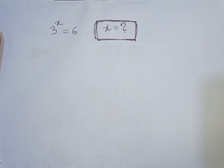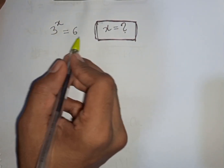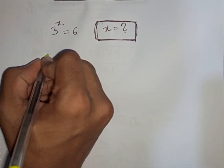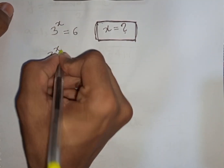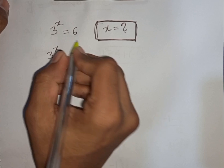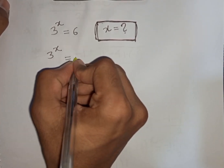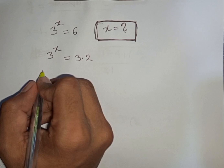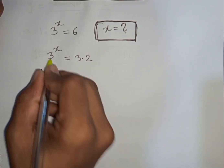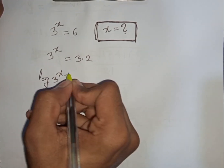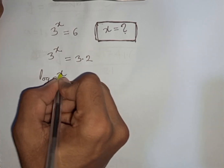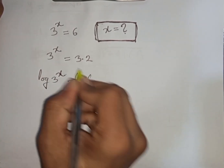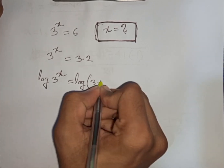How to solve 3 power x is equal to 6. Find the value of x. We have 3 power x is equal to 6, which can be written as 3 times 2. Now we apply log on both sides, so we write log of 3 power x is equal to log of 3 times 2.